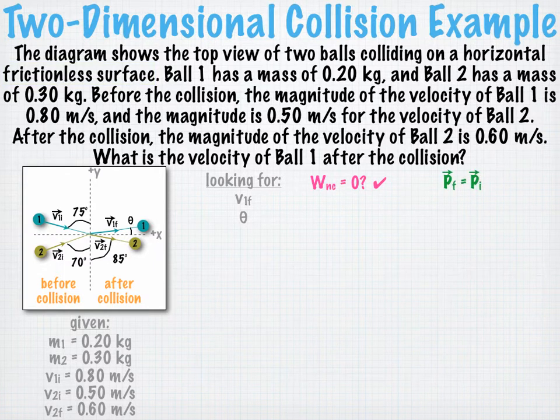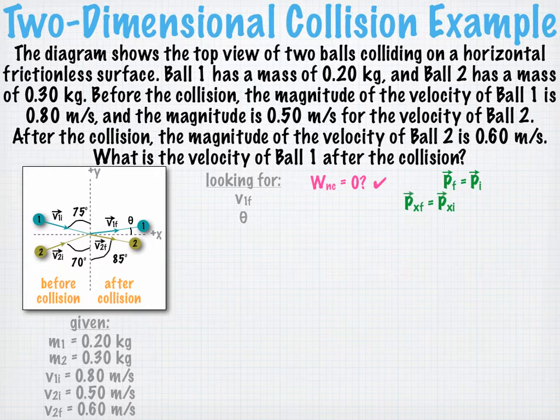When we talked about applying the kinematic equations to two-dimensional problems, we talked about how we can treat the horizontal components of displacement, velocity, and acceleration separately from the vertical components. Since linear momentum is a vector quantity, we can also treat its horizontal and vertical components separately, so that total linear momentum in the x-direction is conserved and total linear momentum in the y-direction is conserved.